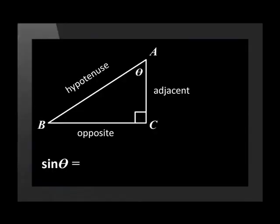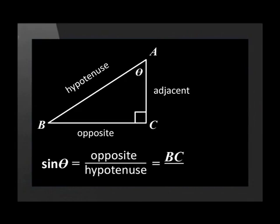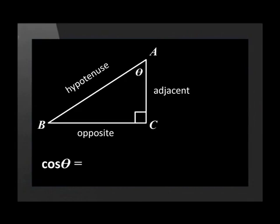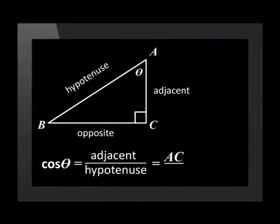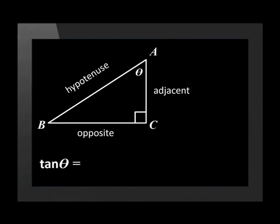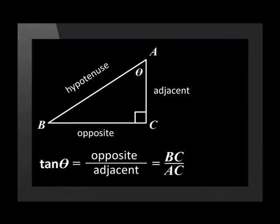Sine of theta is equal to the opposite side BC divided by the hypotenuse AB. Cos of theta is equal to the adjacent side AC divided by the hypotenuse AB. Tan of theta is equal to the opposite side BC divided by the adjacent side AC.